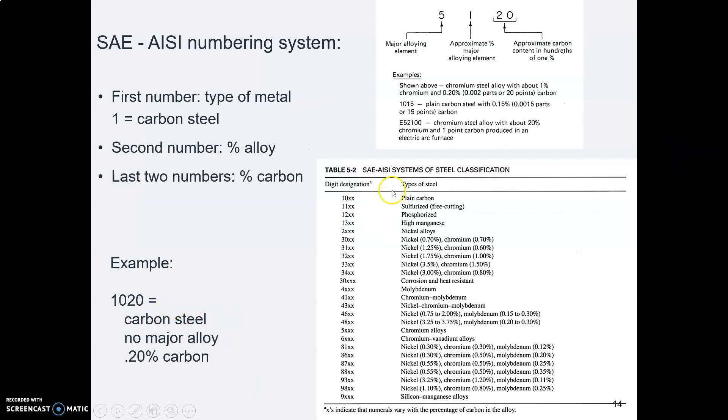For example, and here's a list of the types of materials. 10 is plain carbon, as you can see. So, if you have a steel with 1020 written on the end of the bar, that means it's plain carbon steel, there's no major alloy.